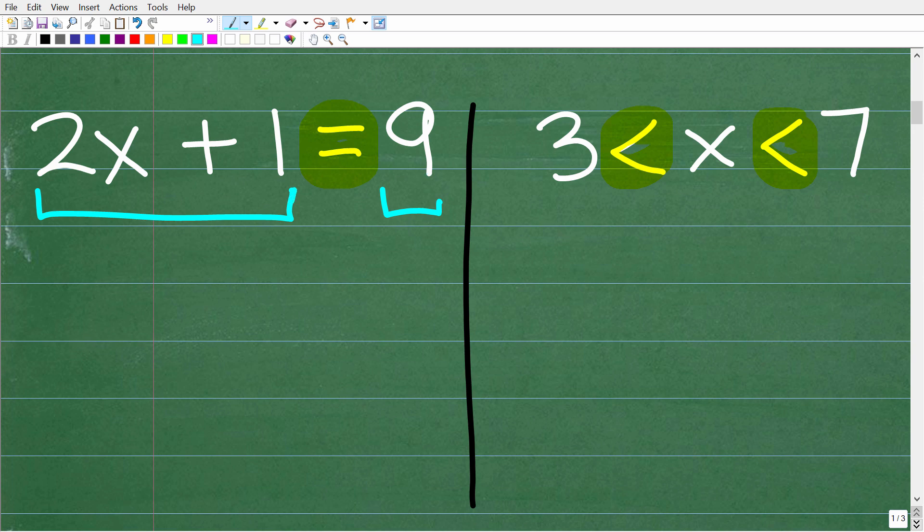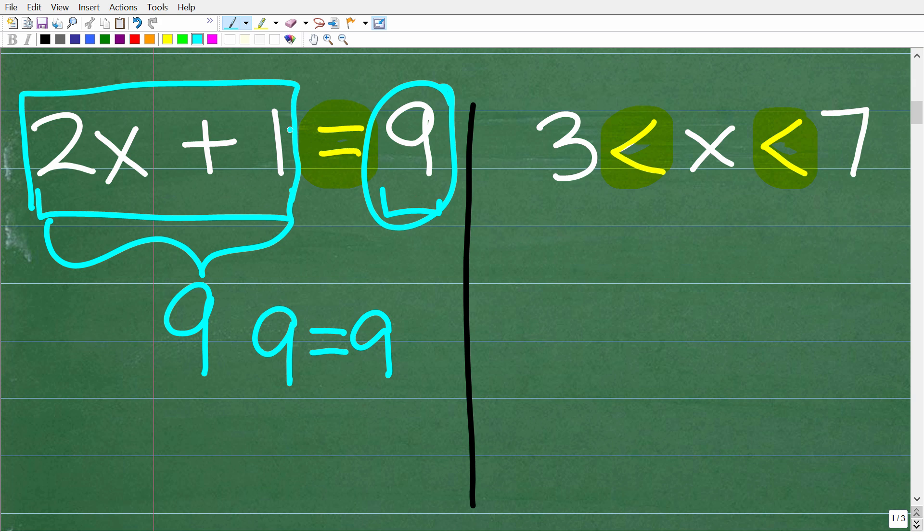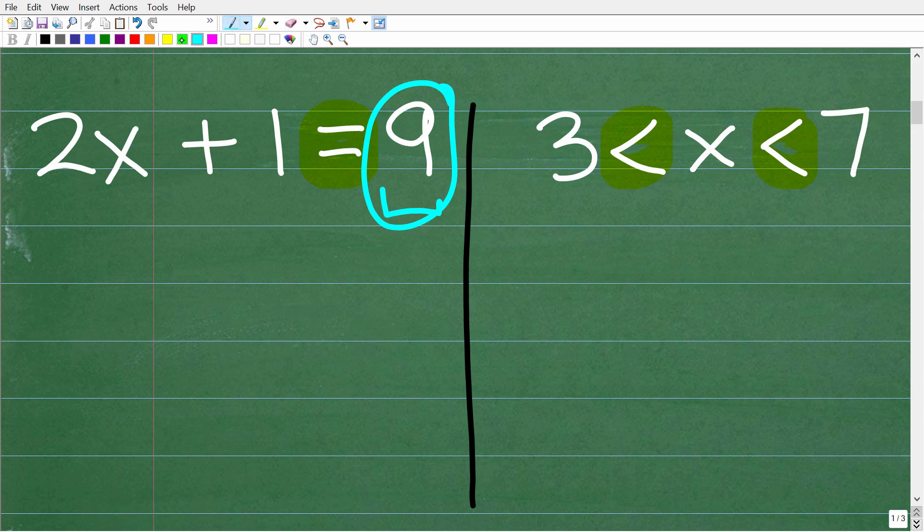So what does that mean? Well, it means that this entire variable expression is also 9, okay? Or it has the value of 9 because 9 is equal to 9. So if the right-hand side of this equation is 9, well, then this right here must also be equal to 9. Now, of course, it says 2x plus 1. But what we're trying to do here is find the value of x, right?